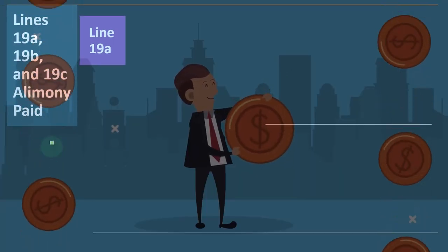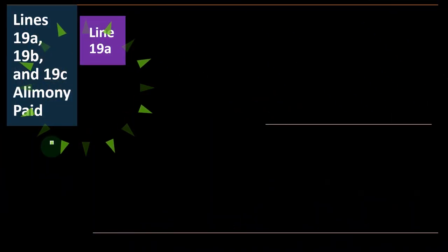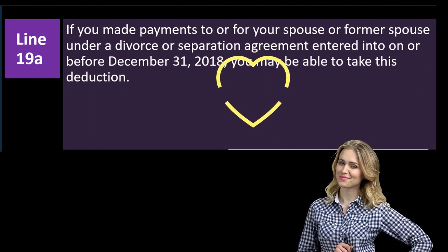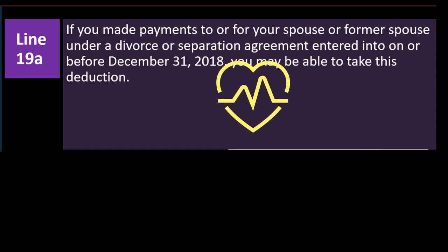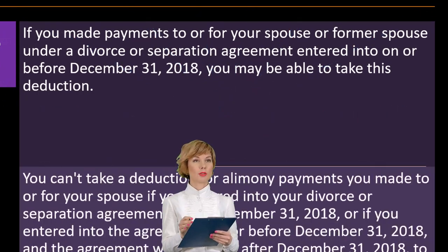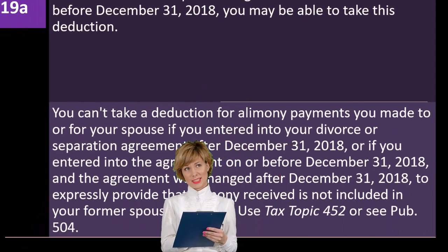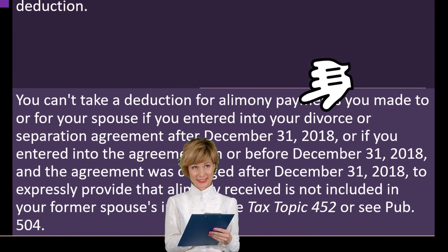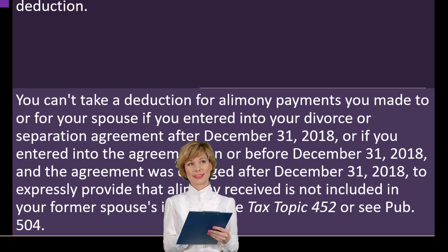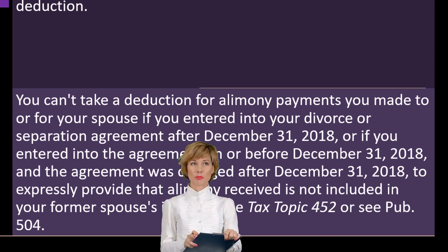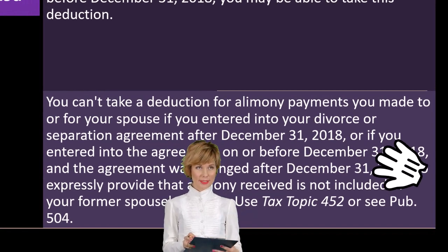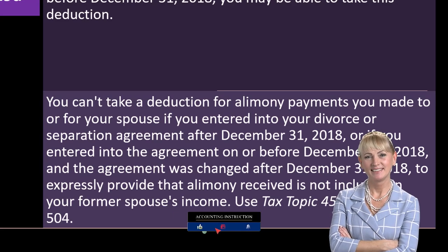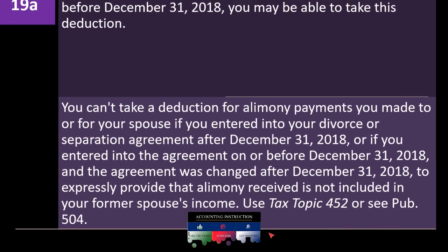Lines 19a, 19b, and 19c — alimony paid. Line 19a: if you made payments to or for your spouse or former spouse under a divorce or separation agreement entered into on or before December 31, 2018 — there's the cutoff date — you may be able to take this deduction. You cannot take a deduction for alimony payments if you entered into your divorce or separation agreement after December 31, 2018, or if the agreement was entered into on or before December 31, 2018 but was changed after that date to expressly provide that alimony received is not included in your former spouse's income. See Tax Topic 452 or Publication 504.